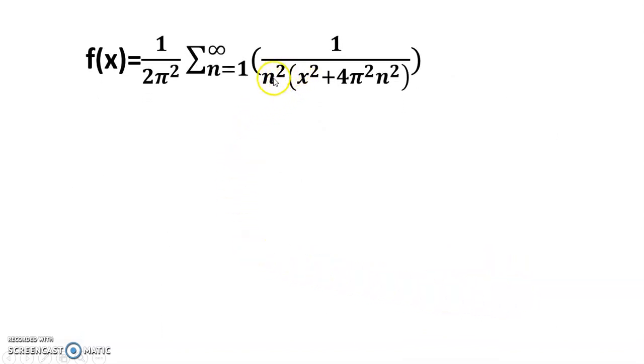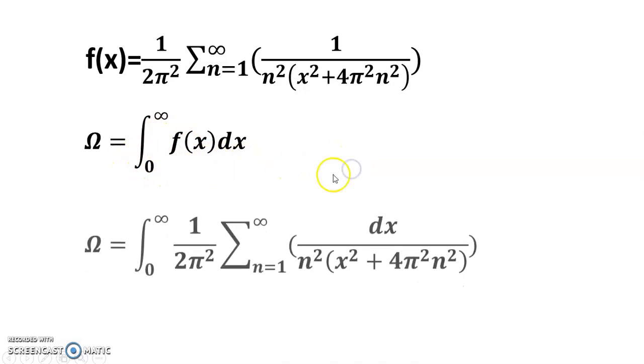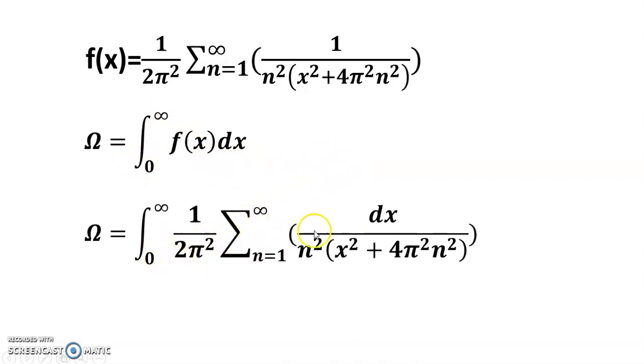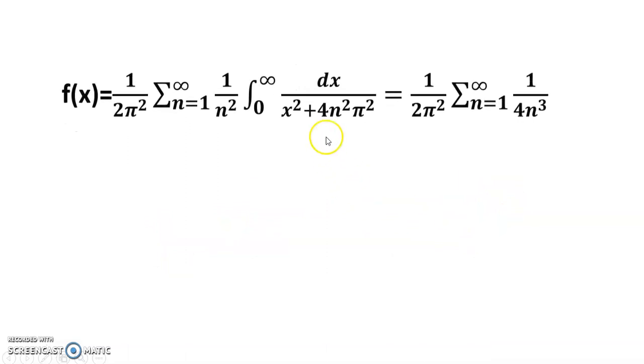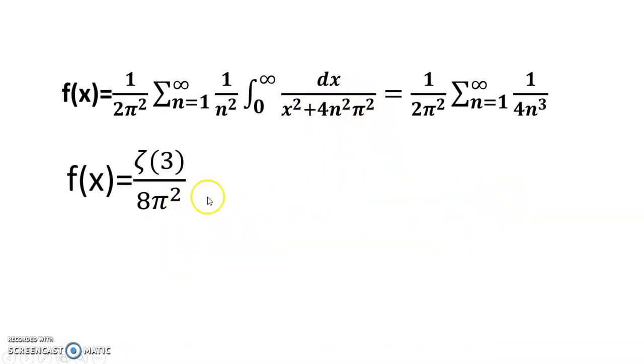So I get the value, and where omega equals integral 0 to infinity of f(x)dx, just doing this, and this portion is tan inverse, ζ(3) divided by 4n³, and ζ(3)/(8π²). Because friends, integration of 0 to infinity dx/(x² + 4n²π²) equals 1/(2nπ) tan⁻¹(x/(2nπ)) from 0 to infinity, so it is 1/(4n).